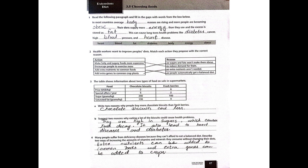Next question: many people suffer from deficiency diseases because they cannot afford to eat a balanced diet. Describe two ways of increasing the amount of vitamins and minerals they consume without changing their diets. If they don't change their diet and don't have proper nutrients, the best way is that extra nutrients can be added to common foods that people already eat.